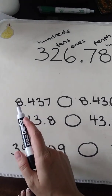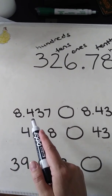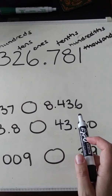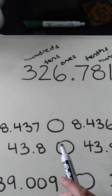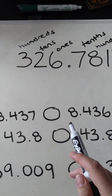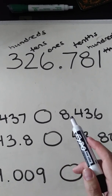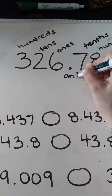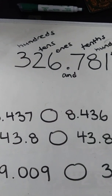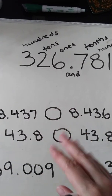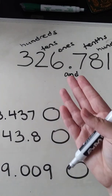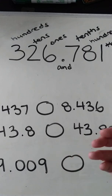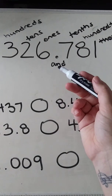Our first example is eight and four hundred thirty-seven thousandths compared to eight and four hundred thirty-six thousandths. Notice how I say the decimals out loud — it's really important. I'm not going to say 'eight point four three six.' The way you say it is with the word 'and.' Your 'and' is your decimal — it's telling you the separation of the parts and the whole. And it's very important that when you say whole numbers, you don't use the 'and,' because that implies there is a decimal there.